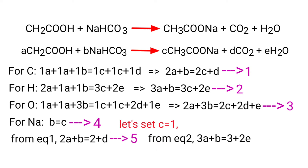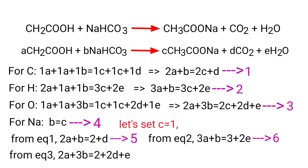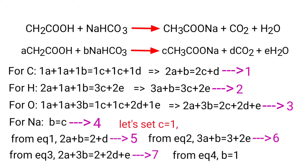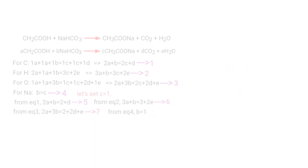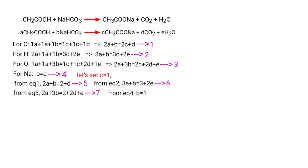From Equation 2: 3A plus B equals 3 plus 2E. From Equation 3: 2A plus 3B equals 2 plus 2D plus E. From Equation 4: B equals 1.